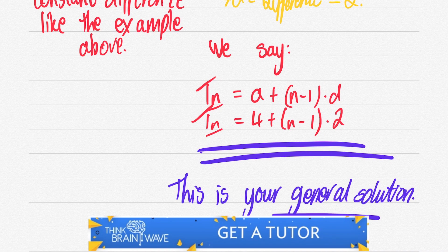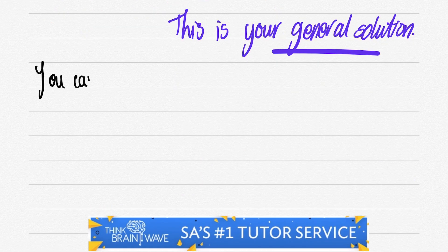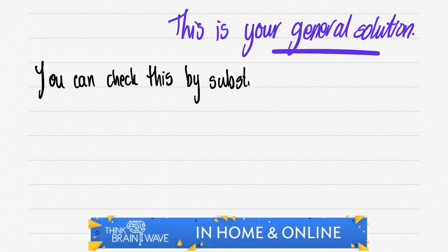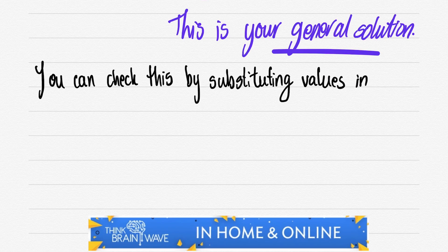So if they ask you in a test please write the general solution for this specific pattern, that's what you will write. You'll write your general and then you'll sub in your points. You can check this by substituting values.